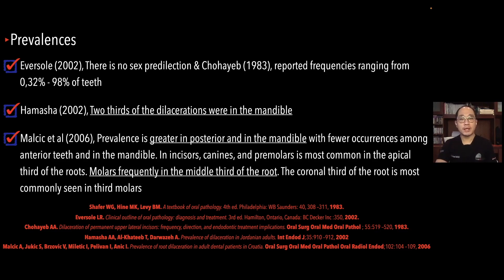So we know that dilacerations — meaning a bend or severe curvature of the root — can happen in both male and female patients, with prevalence up to 98%, and it mostly occurs in the mandibular molars and especially in the molar region compared to other teeth.